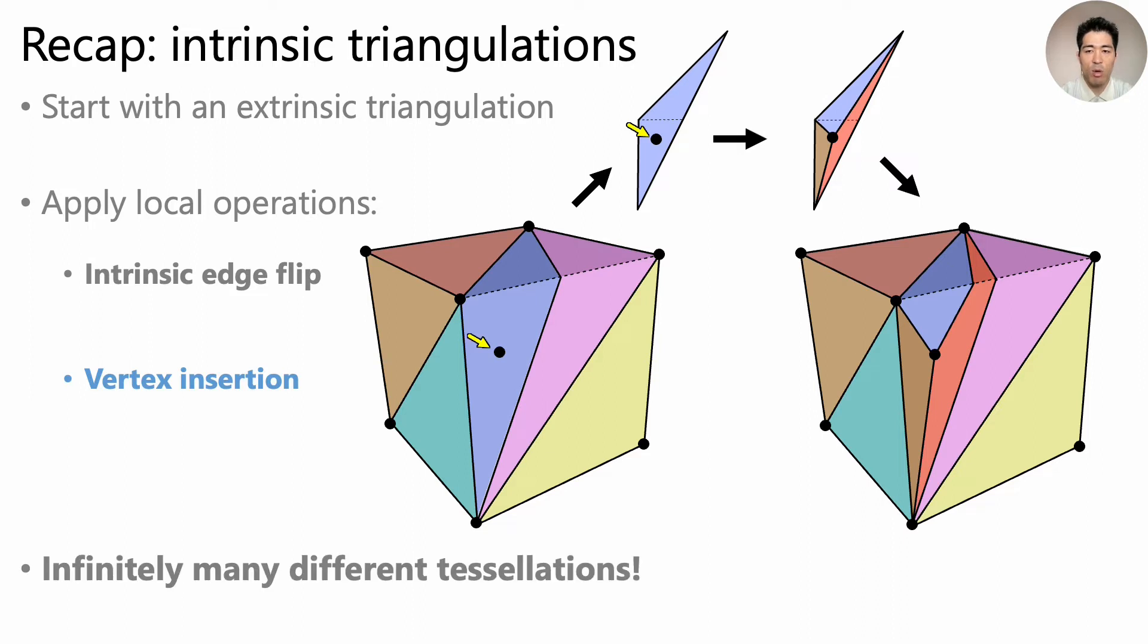Through these local operations, we can get infinitely many different tessellations over the same surface geometry defined by the original triangular mesh.